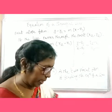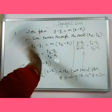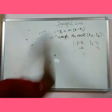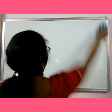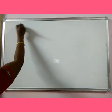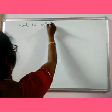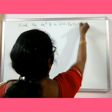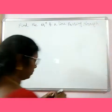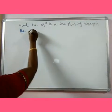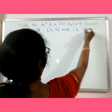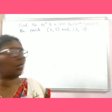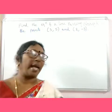Let me give you one example based on this. Find the equation of your line passing through the points 3, 5 and 2, minus 3. Here the two points are given to you. By using these two points and the two-point form of finding the equation of a line, we can find the equation.